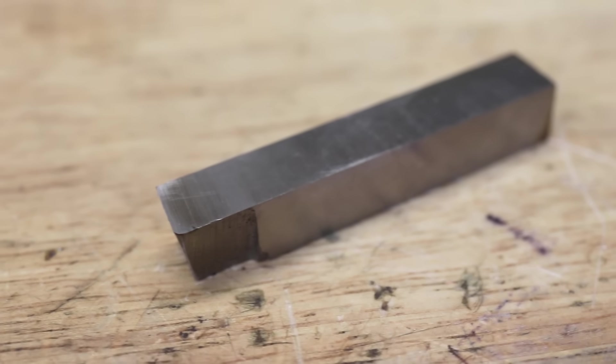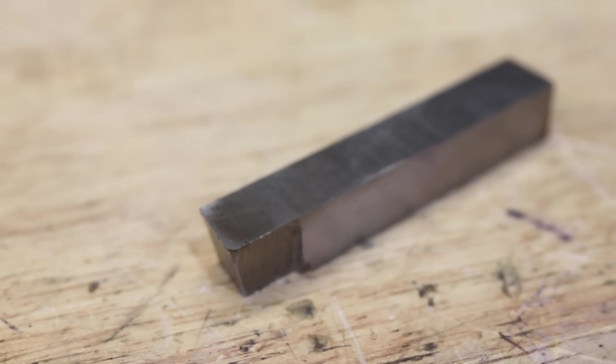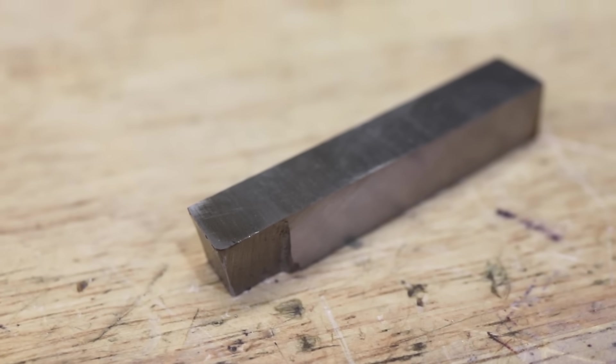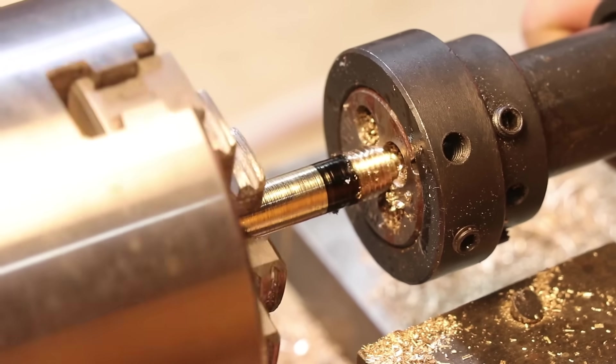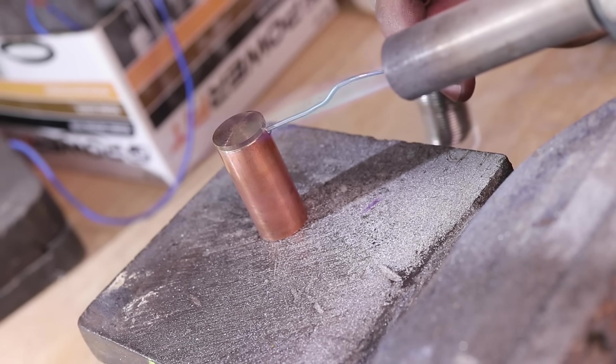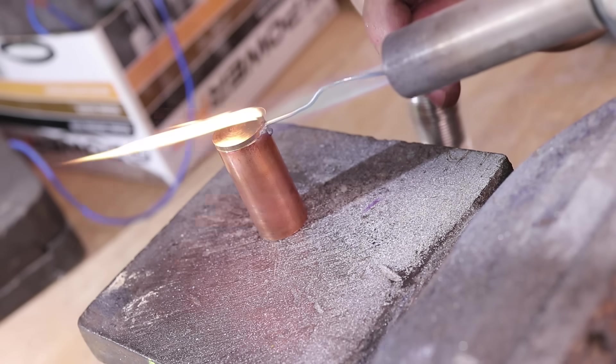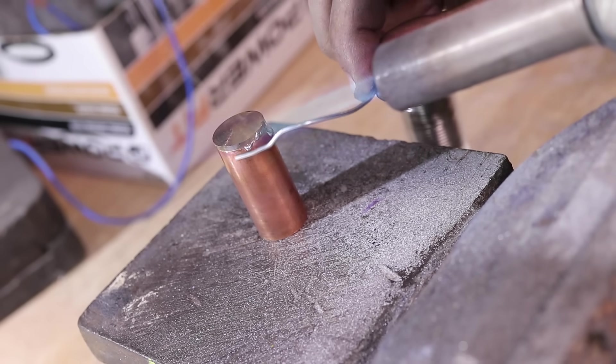When machining it, you want to use a zero side rake tool and no cutting fluid. The only time that I ever use any cutting fluid with brass is when I'm cutting threads.